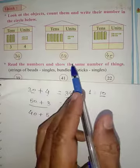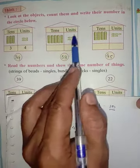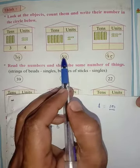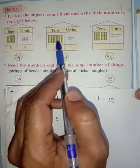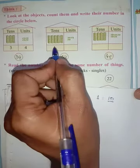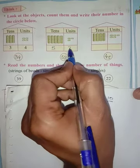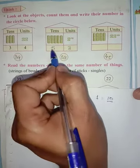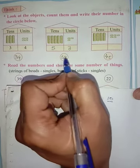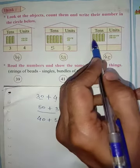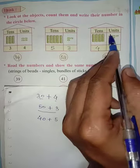Four tens is 40, units: one two three, so it's three units. Fifty-three: five units means fifty and three units. 53. It has one two three four tens, so it's four tens. Units: one two three four five, so it's five units. 45.